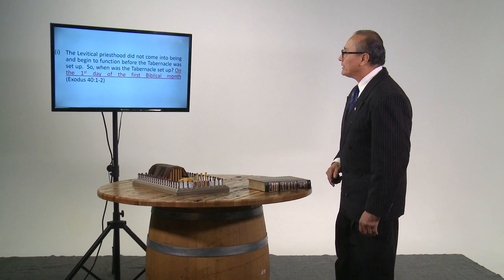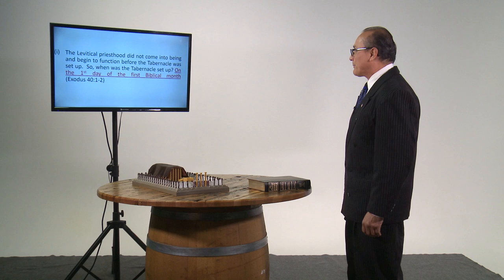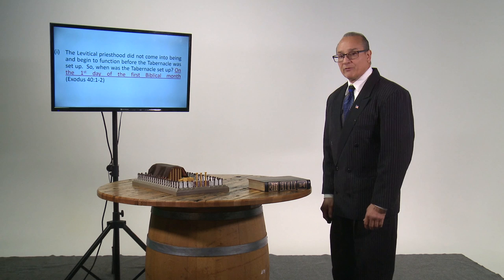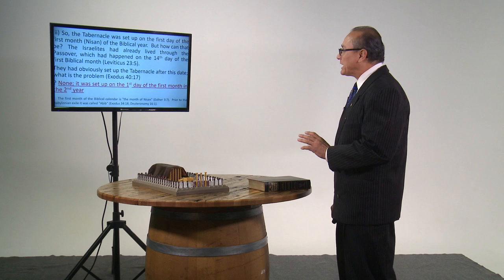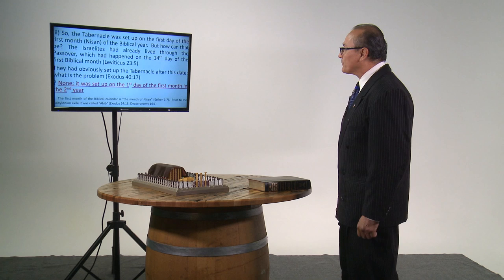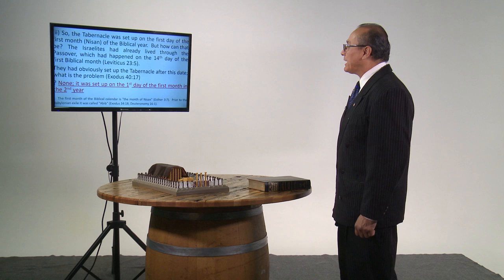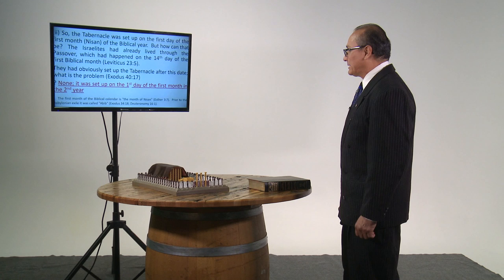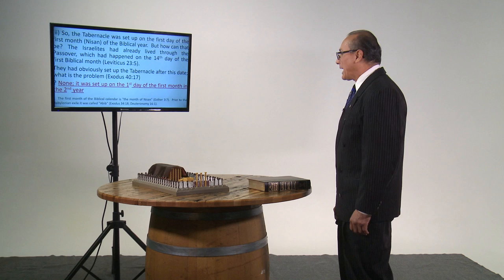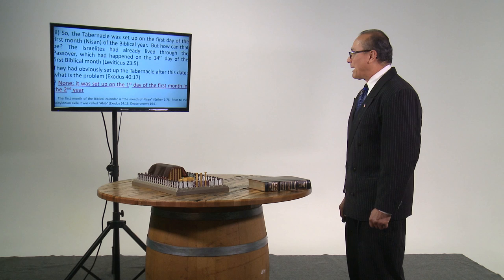The beginning of the priesthood. We know that the course of Abijah was the eighth course of the priesthood. 1 Chronicles 24:10. Each priestly course served for a week at a time, therefore the course of Abijah would be the eighth such course. But when was the yearly starting point? When was the point that started the priestly courses? Once again, the Bible gives us the answers. The Levitical priesthood did not come into being and begin to function before the tabernacle was set up. So when was the tabernacle set up? On the first day of the first biblical month, Exodus 40:1-2. The first month of the biblical calendar is the month of Nisan, Esther 3:7. Prior to the Babylonian exile, it was called Abib, Exodus 34:18.